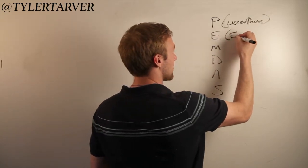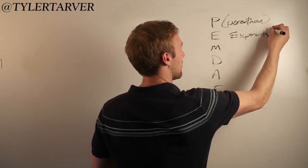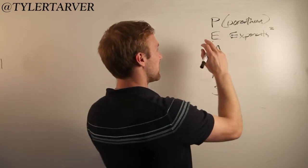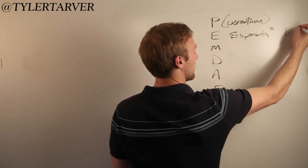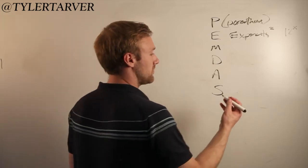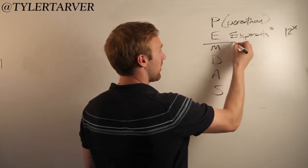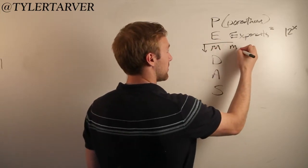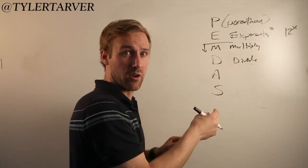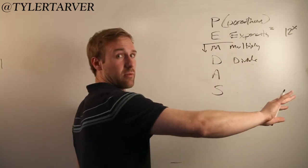E is for exponents — which means the little numbers up there, where a degree sign would be. It's like when you have a number like 12 to the x power, something to the x power. Then M is for multiplication. From there on down it's your regular multiply and divide. Those two are equally important — they just depend on which one comes first in progression from left to right.